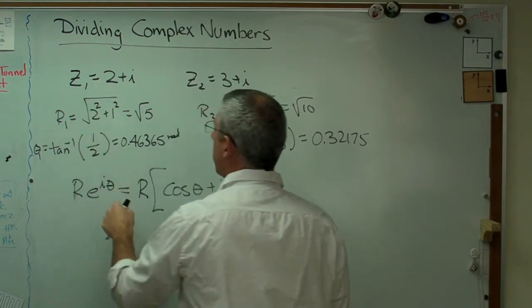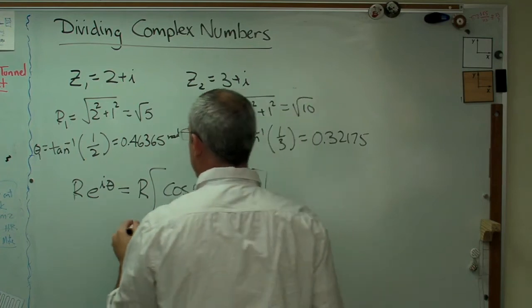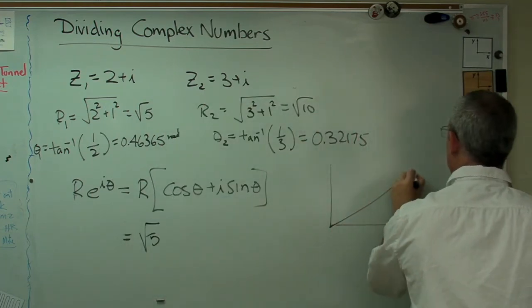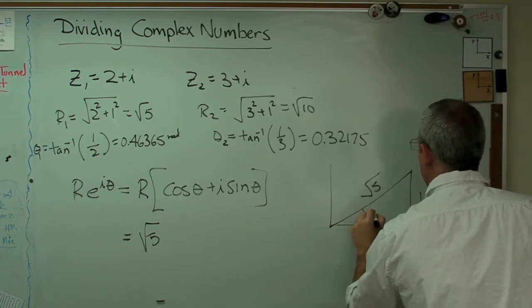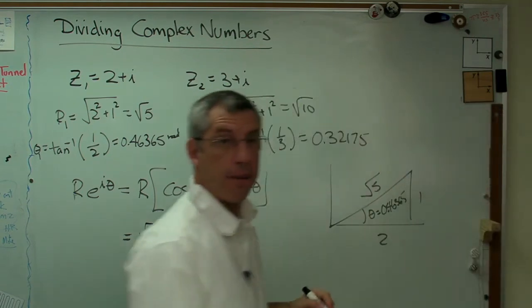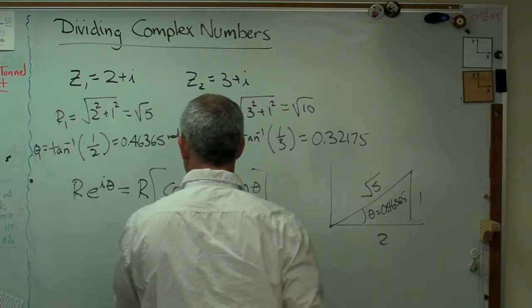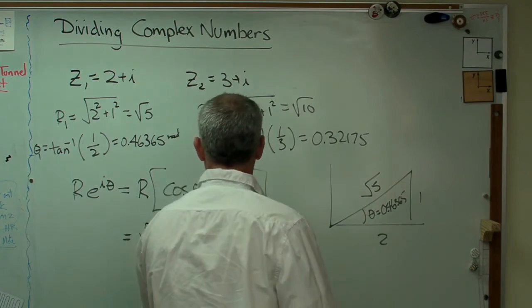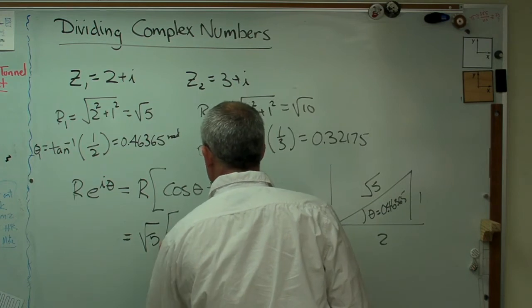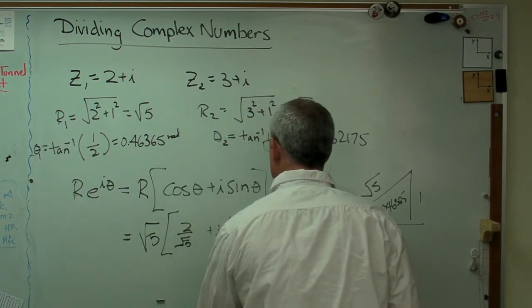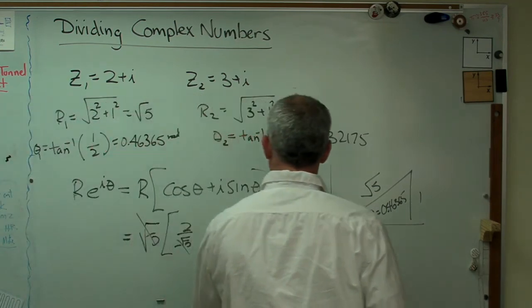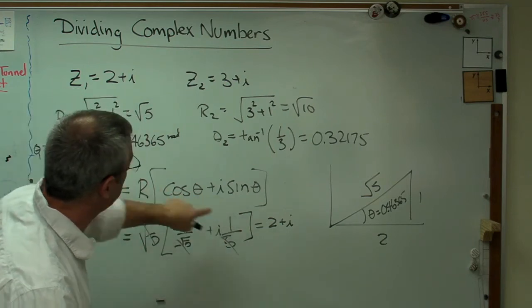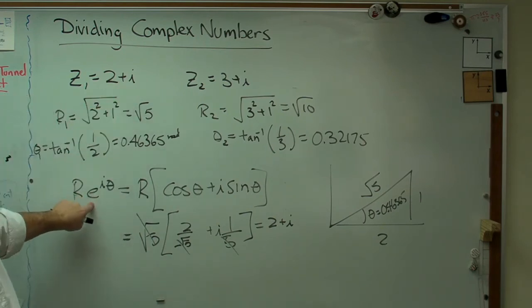So if I want to write this number right here in this kind of coordinate, I need to write the square root of 5, which is the radius. Square root of 5, and theta equals 0.46365. Cosine theta is 2 over the square root of 5, plus i sine theta. Sine theta is 1 over the square root of 5. So i times 1 over the square root of 5. That equals 2 plus i. Oh, that's good. That's that number right there. So this stuff over here on the right side equals that number. Therefore, this number must equal that.